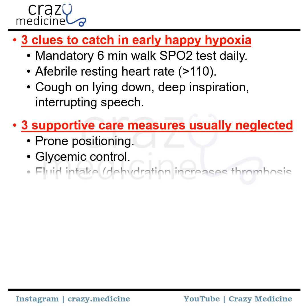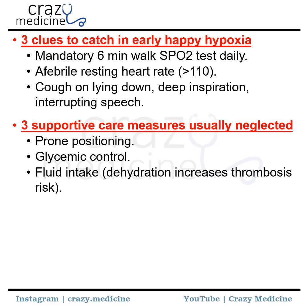The next is three supportive care measures which are usually neglected. First and most important is prone positioning — the government itself has released information on the importance of prone positioning and we have seen many patients whose saturation remarkably improves after proning. The next is glycemic control — as we are starting patients on steroids, sugars are going to increase, and strict glycemic control will prevent complications like sepsis and opportunistic infections. Then fluid intake — dehydration also increases the risk of thrombosis.